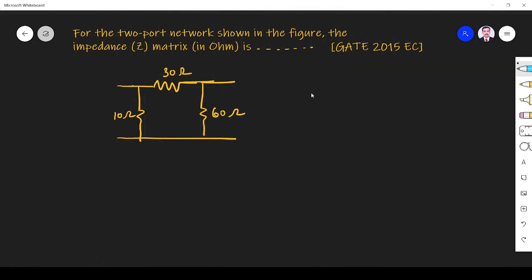Impedance matrix means Z matrix. We know the Z matrix is given by Z11, Z12, Z21, Z22. This is what we have to find.